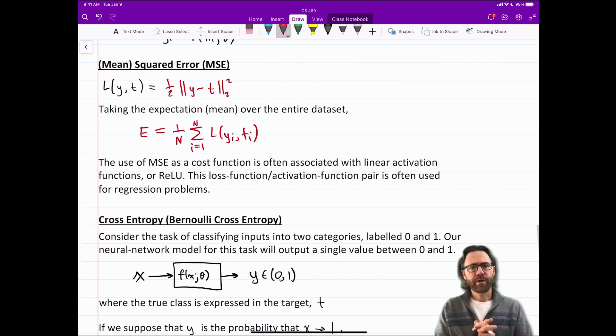So the use of the mean squared error as a cost function is often associated with linear activation functions or RELU. RELU is kind of linear on one side anyway. So this loss function activation function pair MSE with a linear activation function is often used for regression problems.